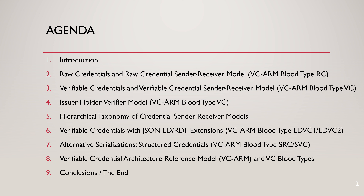We'll review raw credentials and the raw credential sender-receiver model, the verifiable credentials and verifiable credential sender-receiver model, and the issuer-holder-verifier model. More importantly, that leads us to item five: a hierarchical taxonomy of credential receiver models, which is really the embryo for creating the verifiable credential architecture reference model. In step six, we'll look at verifiable credentials with JSON-LD RDF extensions — the at-context and at-vocabulary markers. In step seven, we'll look at alternative serializations, referred to as structured credentials. Then in step eight, we'll bring everything together into the verifiable credential architecture reference model.